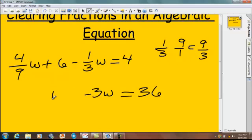Bring down your sign and then bring down your W. 9 times 6 is 54. And then 4 over 9 times 9 is going to give us 36 over 9, which is going to give us 4.